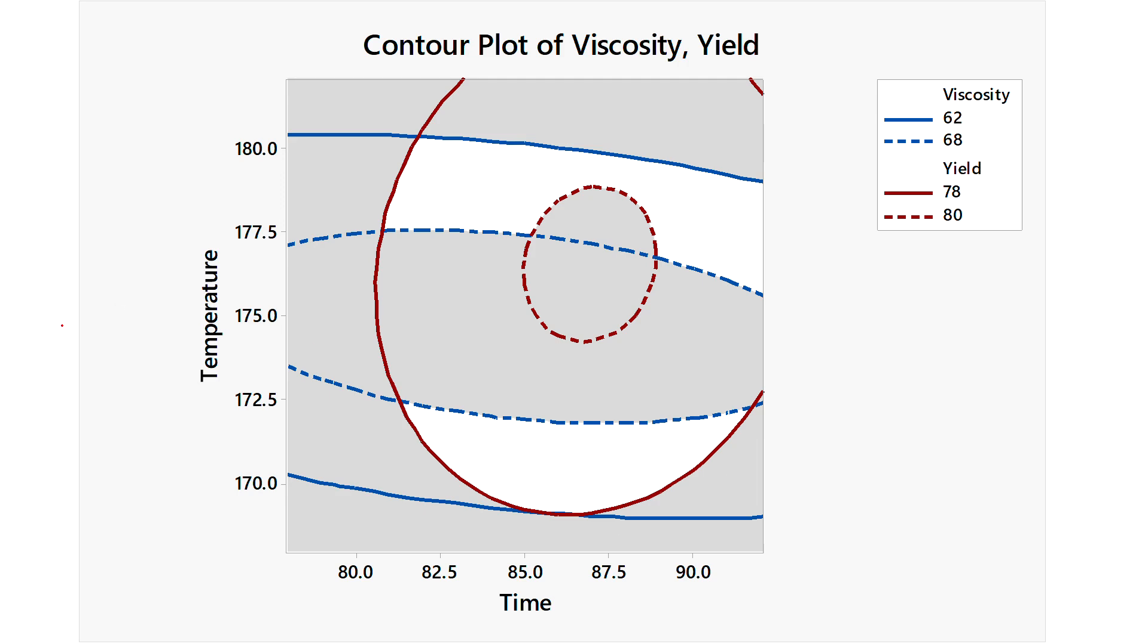As you can see here, let me grab my pen. So over this blue solid line, over this, the viscosity decreases. So less than also, this is the 62 viscosity line. If you go below that, the viscosity decreases too. It's a 62 line.